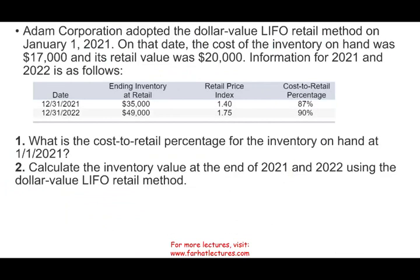Let's go ahead and start to look at this problem. Adam Corporation adopted the dollar value LIFO retail method on January 1st, 2021. Although I'm going to be explaining what dollar value LIFO is, I do have a half-hour explanation about this topic on my website, along with more exercises. On that date, the cost of inventory on hand was $17,000 and the retail value was $20,000. Information for 2021 and 2022 is as follows.